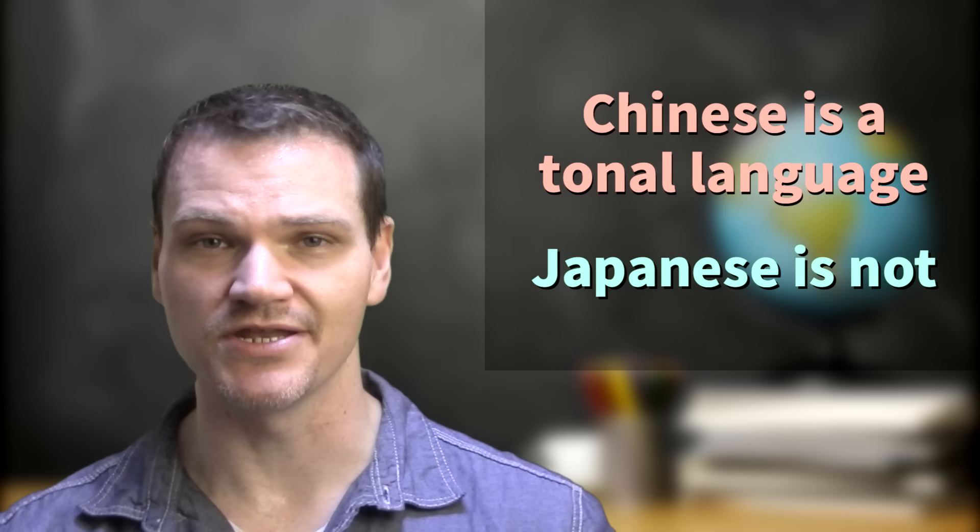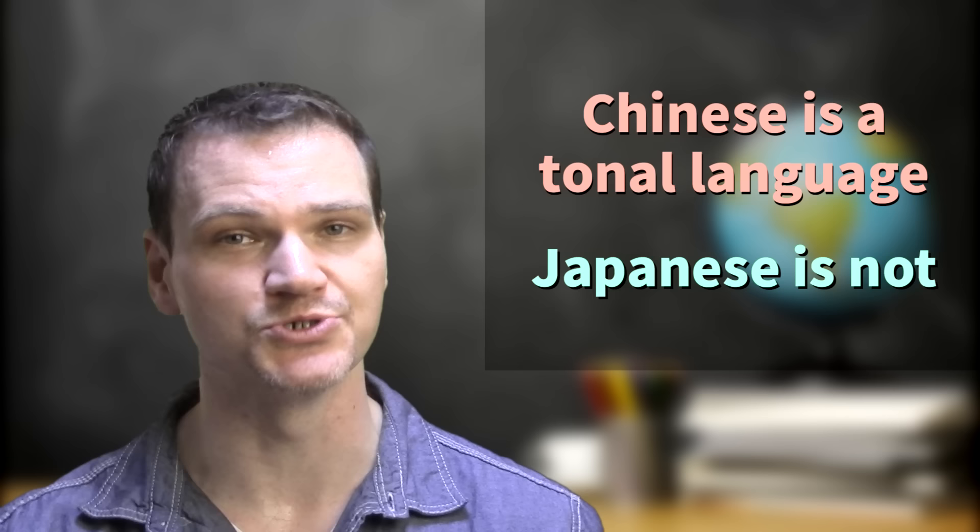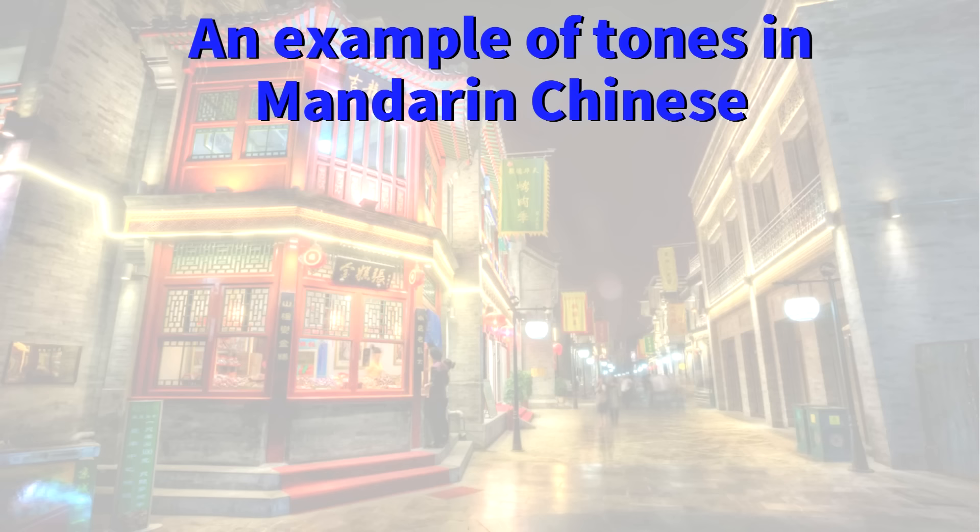Phonology. First off, the phonology of the languages is very different, with the most basic difference being that Chinese is a tonal language while Japanese is not. A tonal language is one in which there are tones or pitches that help determine the meaning of the words you use. If you use the wrong tone, then the meaning of the word changes.